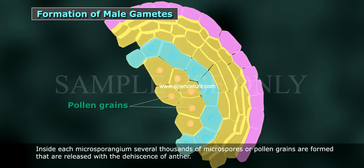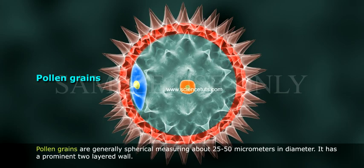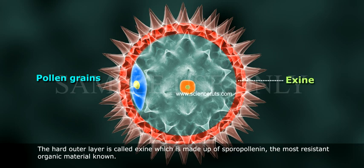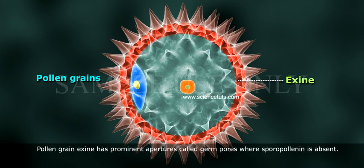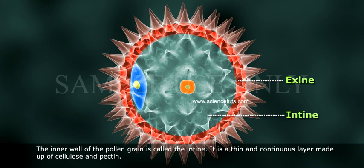Inside each microsporangium, several thousands of microspores or pollen grains are formed that are released with the dehiscence of the anther. Pollen grains are generally spherical, measuring about 25 to 50 micrometers in diameter. They have a prominent two-layered wall. The hard outer layer is called the exine, which is made up of sporopollenin — the most resistant organic material known. Pollen grain exine has prominent apertures called germ pores where sporopollenin is absent.